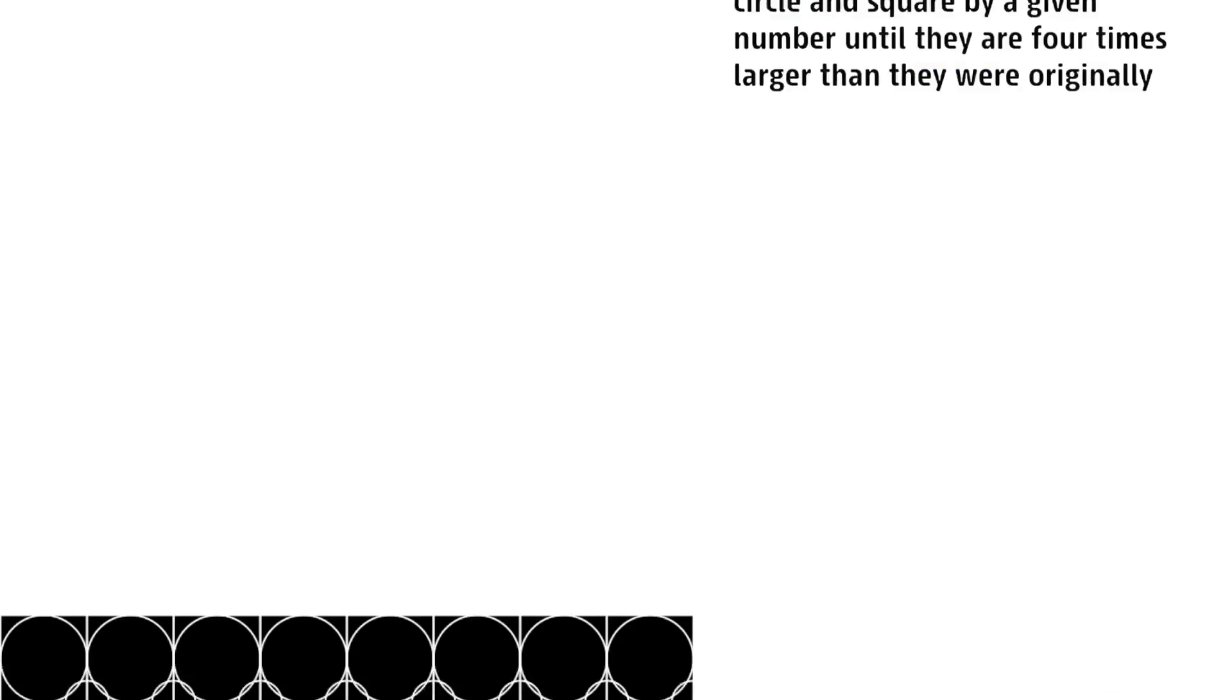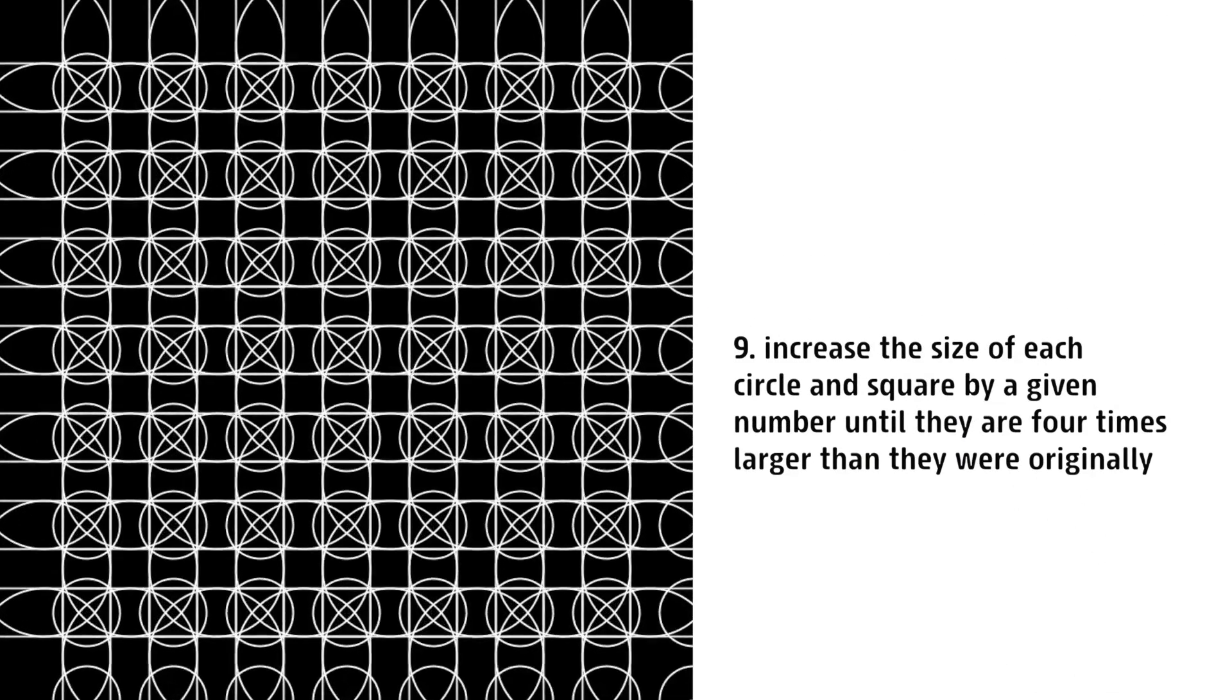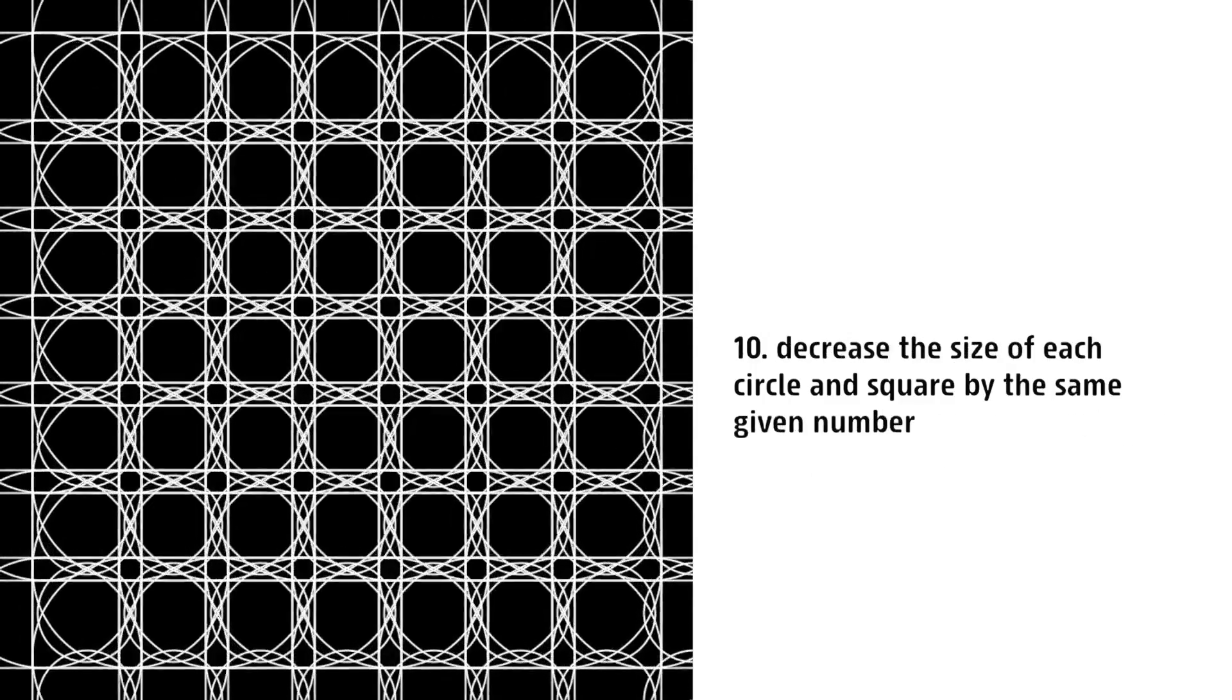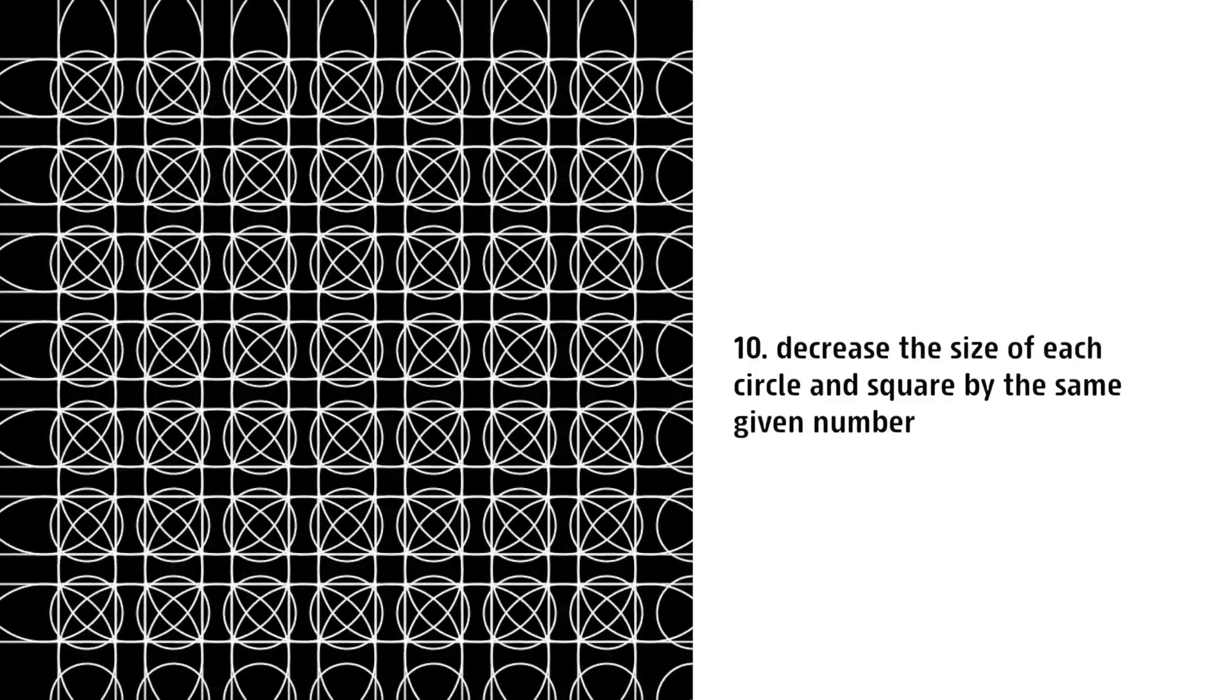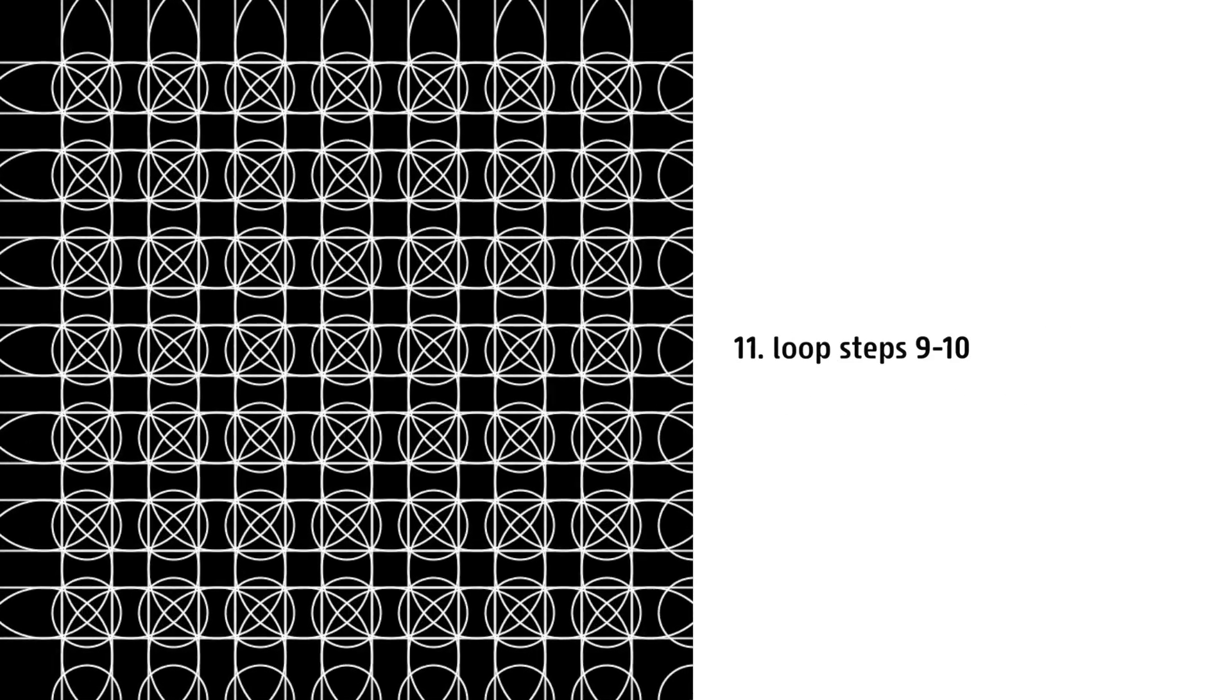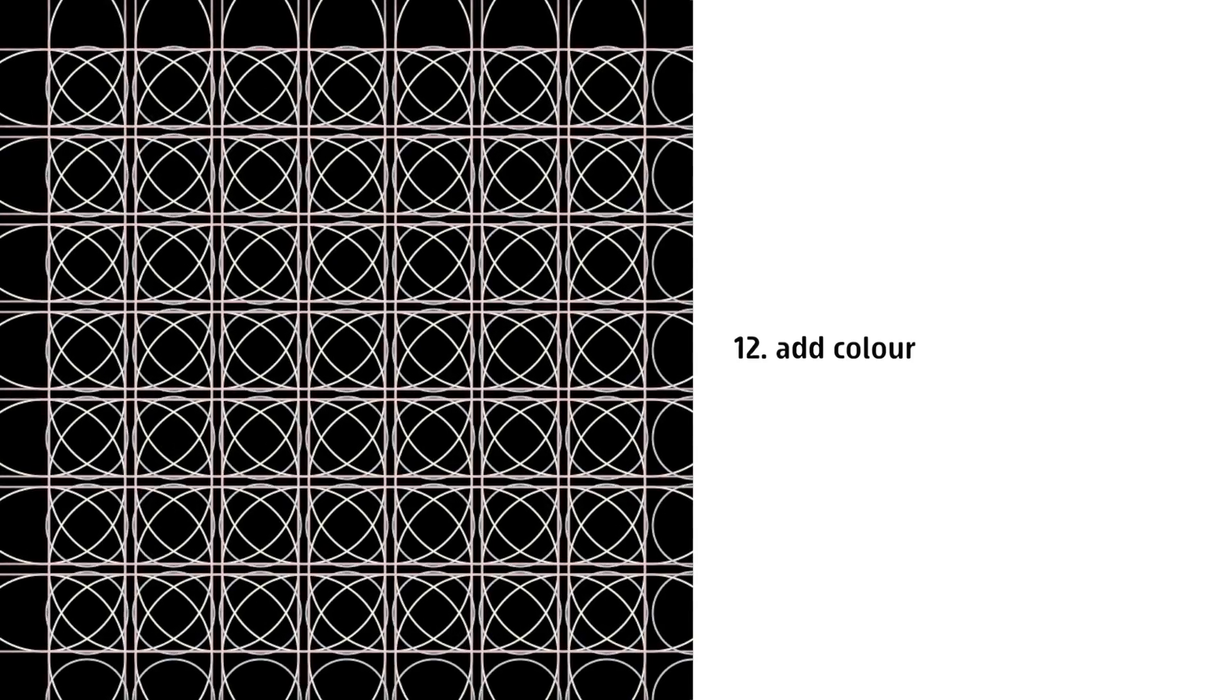Now three more rules will animate the generative pattern. So the first rule would be Step 9: Increase the size of each circle and square by a given number until they are 4 times larger than they were originally. Step 10: Decrease the size of each circle and square by the same given number. And Step 11: Loop steps 9 to 10. And the final step might be Add Color.